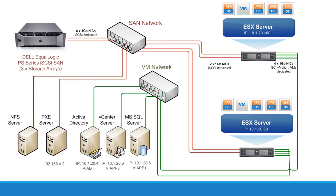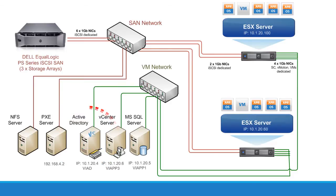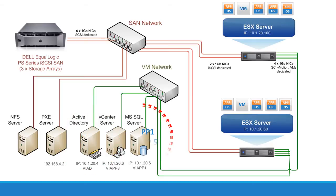Now let's look at the regular virtual machine network (green color). The VM network has an Active Directory server called VIAD with IP address 10.1.20.4. We use it as a domain controller to authenticate and authorize all users and computers in the network, and also to integrate VMware ESXi server and vCenter authentication with Active Directory. There's a DNS server at IP address 10.1.20.3 — DNS is a required component for most VMware features to work properly. We also have a Microsoft SQL Server called vApp1 with IP address 10.1.20.5, which hosts all of the VMware vSphere databases, such as the vCenter database and Update Manager database.